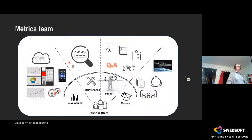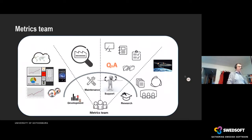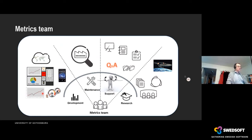A metrics team, for instance my metrics team, operates in four areas. We have development, and from the outside what we see are information products delivered to the organization such as Excel and dashboards. All these reside on an infrastructure which we need to maintain.